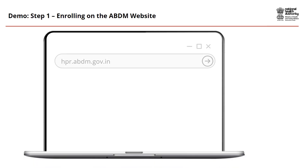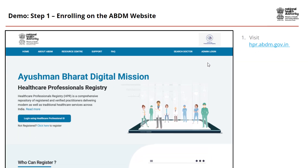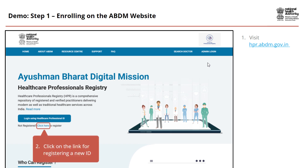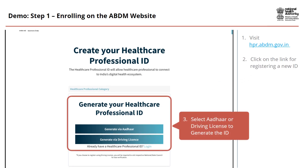Step 1: Enrolling on the ABDM website. Visit the URL hpr.abdm.gov.in. Click on the link shown on the screen to register for a new Healthcare Professional ID. Select Aadhaar or Driving License as the ID proof to generate the Healthcare Professional ID. Let us understand the registration process for both the IDs.